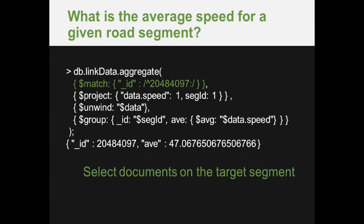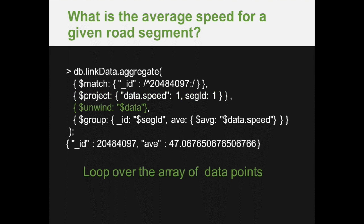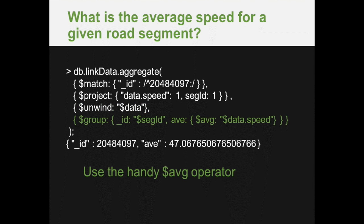We'll now do a projection of the speed. Essentially, here we are choosing, based upon the documents we've selected, to pull out the speed and the segment ID. This creates still the same stream of documents from the database, but just projects the individual fields we want, saving us from returning any other fields we may not need. Then an unwind operation, which loops over the data points — these individual minutes within our document. And finally, a group operation. This is going to create the output stream of documents, with the primary ID being the segment ID and the average being produced over these unwound data fields.